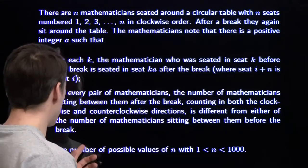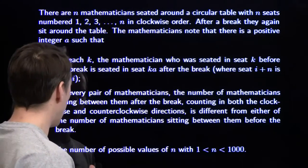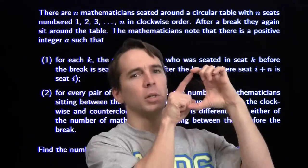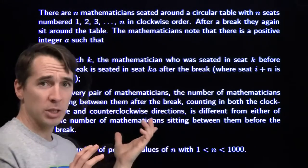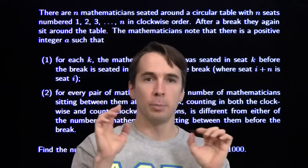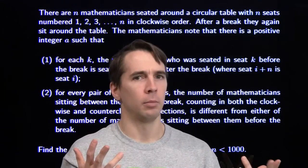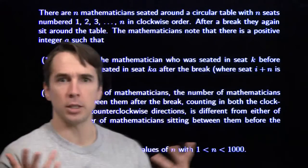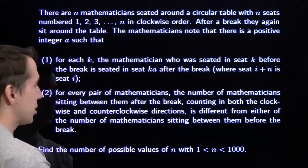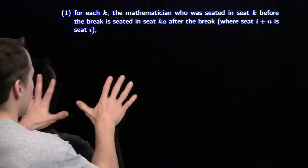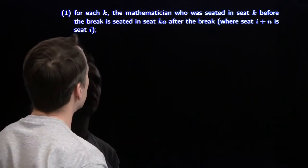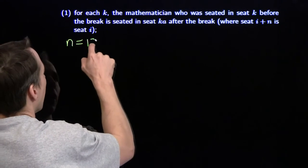Condition 2: for every pair of mathematicians, the number of mathematicians sitting between them after the break — counting in both the clockwise and counterclockwise directions — is different from either number of mathematicians sitting between them before the break. I'm just going to focus on the first condition and hope that something interesting comes out of it, and then we'll dive into that whole clockwise and counterclockwise thing.